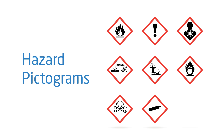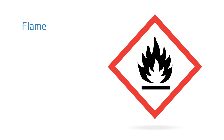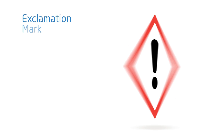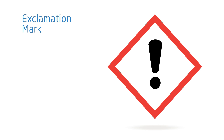Depending on the hazard classification, these eight pictograms can apply to Axalta paint products. The flame pictogram signifies a number of potential hazards, including flammables, pyrophorics, self-heating, emits flammable gas, self-reactives, and organic peroxides. The exclamation mark indicates irritant skin and eye.